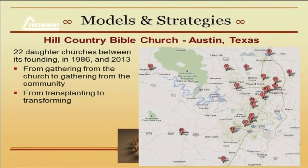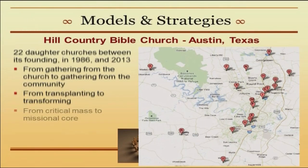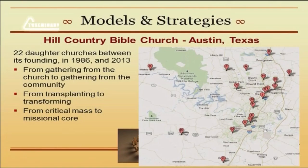Another principle: from transplanting to transforming — not just sending out 20 or 30 people, but actually transforming that community. Instead of seeking a critical mass, seek a missional core. Many people in church planting say you need at least 30, 50, or even 100 adults — a critical mass — or the church may fail. But Hill Country says that's not the right way to think. It's not the number of people you start with; it's the kind of people you start with.